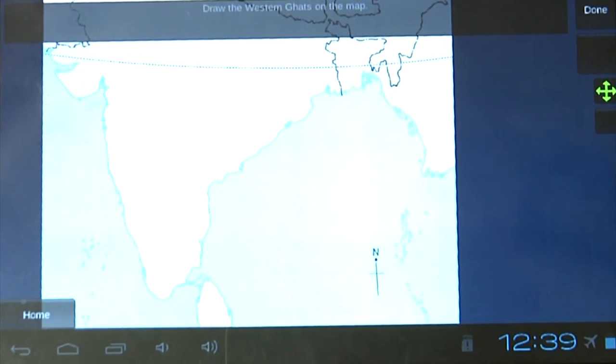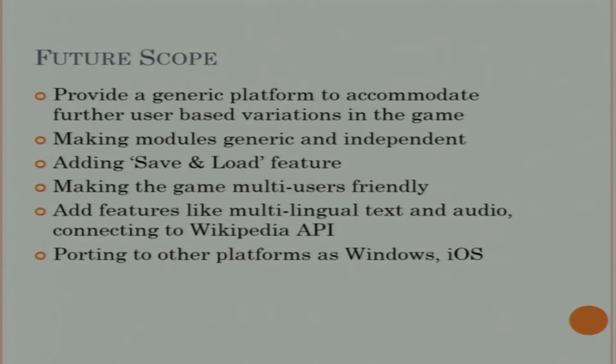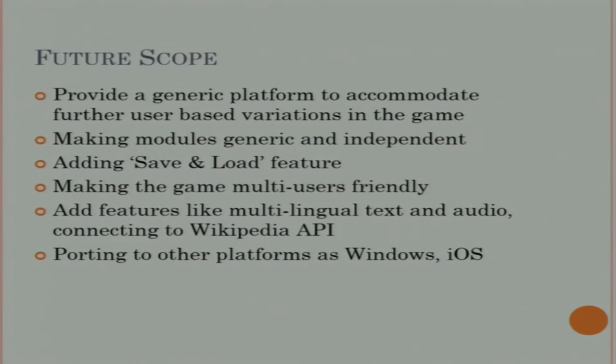Wrapping up, the presenter acknowledges some flaws in content design and explains the future direction: developing each module as a generic and dynamic module where any instructor can input their own content and images, and the game will adapt accordingly. For example, the concept used to identify states could be repurposed for identifying neighboring countries. The team says they are primarily focused on the technical aspect, with the current games serving as examples of how modules can be used in various scenarios.